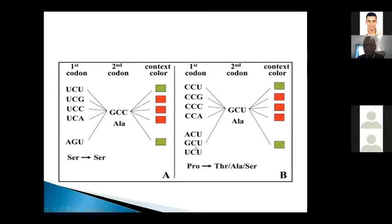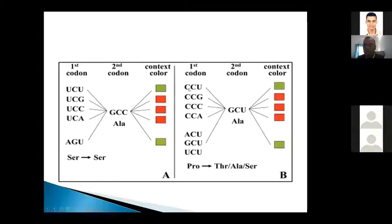Similarly in another case, there is a proline sequence followed by a leucine sequence. Applying the algorithm, scientists found that a specific proline codon — for example CUC — is most suitable for pairing with threonine in that particular protein. This is simply an example; the detailed algorithm will be discussed later.